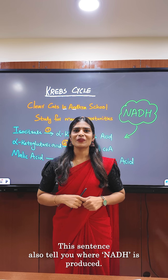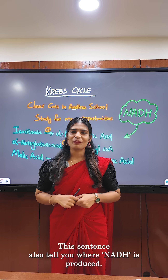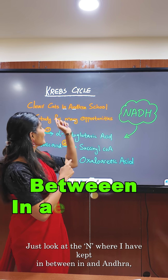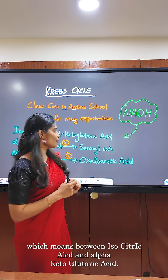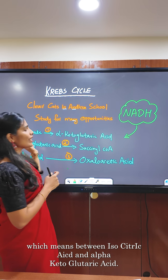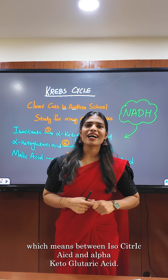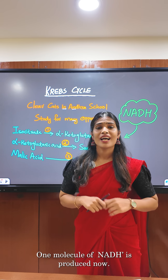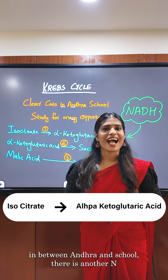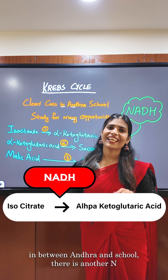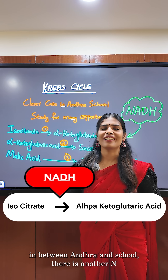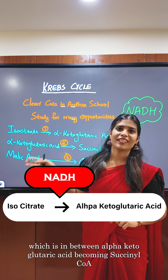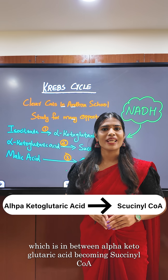This sentence also tells you where NADH is produced. Just look at where I have kept the letter N. In between 'in' and 'Andhra,' which means between isocitrate and alpha ketoglutaric acid, one molecule of NADH is produced. Now in between 'Andhra' and 'school' there is another N — the second NADH molecule is produced here, which is when alpha ketoglutaric acid becomes succinyl coenzyme A.